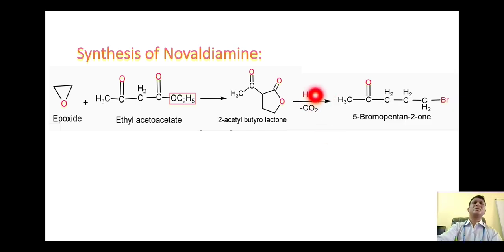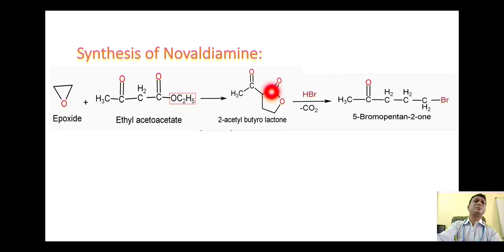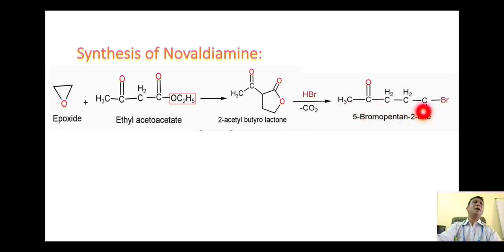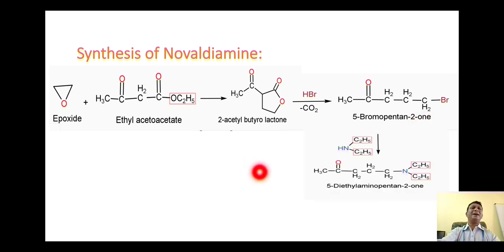When this lactone is reacted with HBr (hydrogen bromide), the hydrogen attaches on the alpha carbon and the bromine attaches on the gamma carbon, with release of CO2, to give the open-chain compound 5-bromopentane-2-one. It is a ketone, so numbering starts from the end: carbons 1 through 5, with bromine on position 5. The carbon chain is 5 carbons (pentane), and the doubly bonded oxygen is on position 2, making it 2-one.